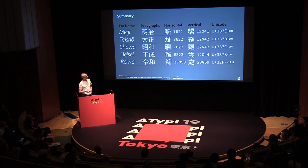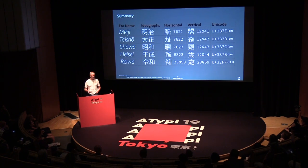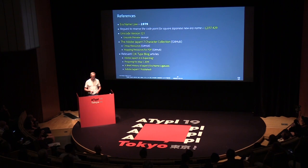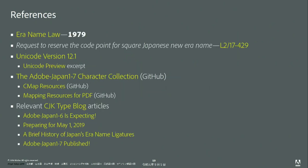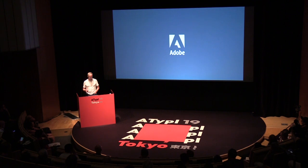This final slide is a summary of the five modern era-name ligatures: the era name in Latin, the ideographs, horizontal and vertical forms, the Adobe Japan 1.7 CIDs, the Unicode value, and the Unicode version. This will be made available as a PDF — if you're on Twitter you can probably find it soon. The yellow text are links for further information; I strongly encourage clicking the Adobe Japan 1 specification. If you develop Japanese fonts, all of this will be very important to you. Hopefully that wasn't too boring — thank you very much.